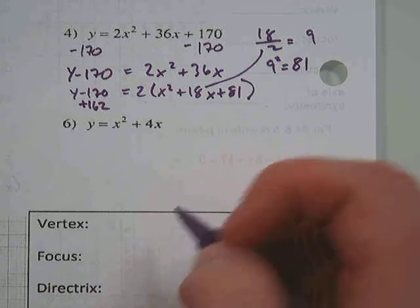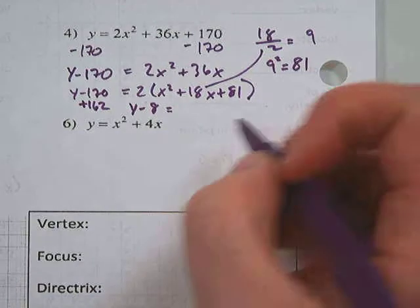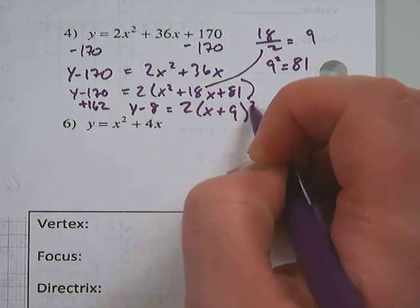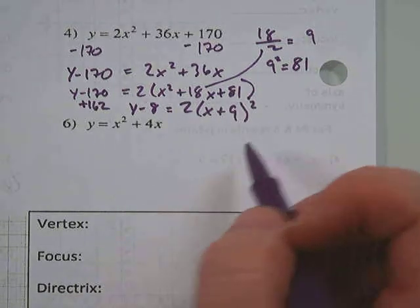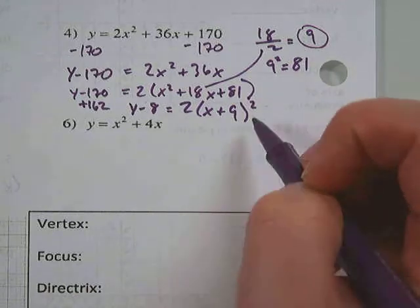So simplifying this, we get y minus 8 equals 2 times x plus 9 squared, since we want to factor this out. And really the trick you can use is you take whatever you had from here, and it's x plus that squared.